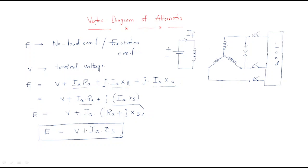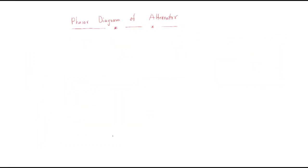Hello everyone. In the last session we discussed about the voltage drops across the alternator, where the open circuit voltage E equals the terminal voltage plus the drop ia·Zs. Next, we will draw the phasor diagram of the alternator, which is a very important topic.